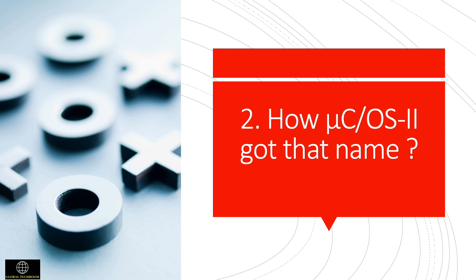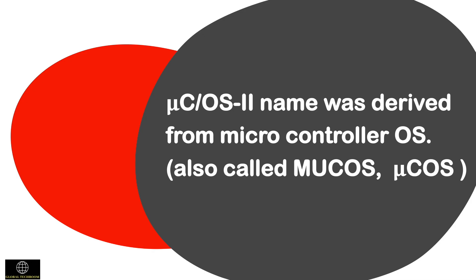Next, we shall see how MicroC/OS-2 got its name. It is the acronym for Microcontroller Operating System Version 2. The name was derived from Microcontroller OS, also called MicroC/OS.